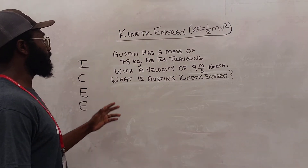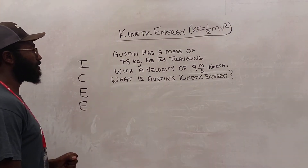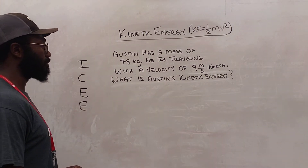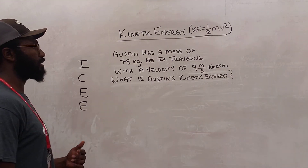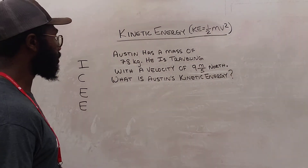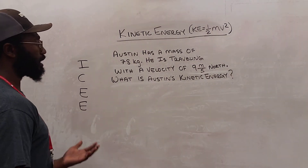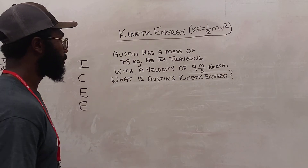The problem reads: Austin has a mass of 78 kilograms. He is traveling with a velocity of 9 meters per second north. What is Austin's kinetic energy?